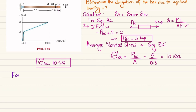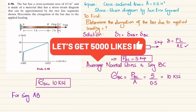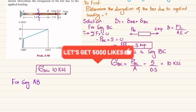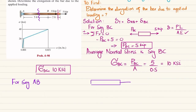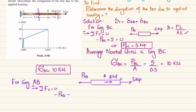For segment AB, we cut it and draw the free body diagram. At point C we have a 5 kips load, and at point B we have a load of 8 kips. To balance these, we have force P_AB acting to the left. Using equilibrium: negative P_AB plus 8 plus 5 equals zero, so P_AB equals 13 kips.